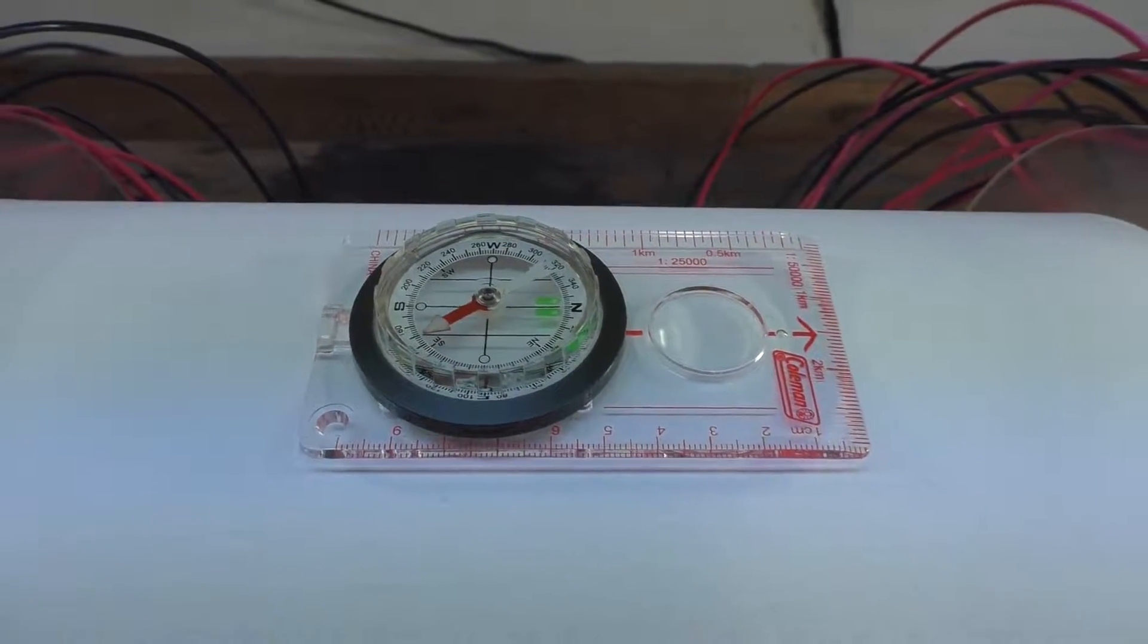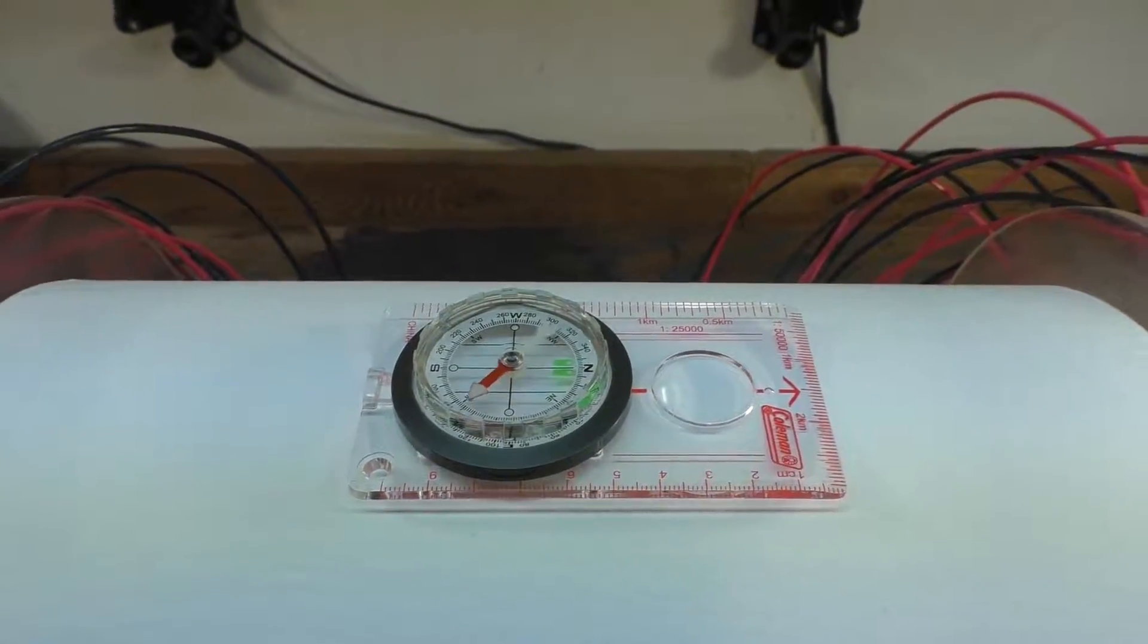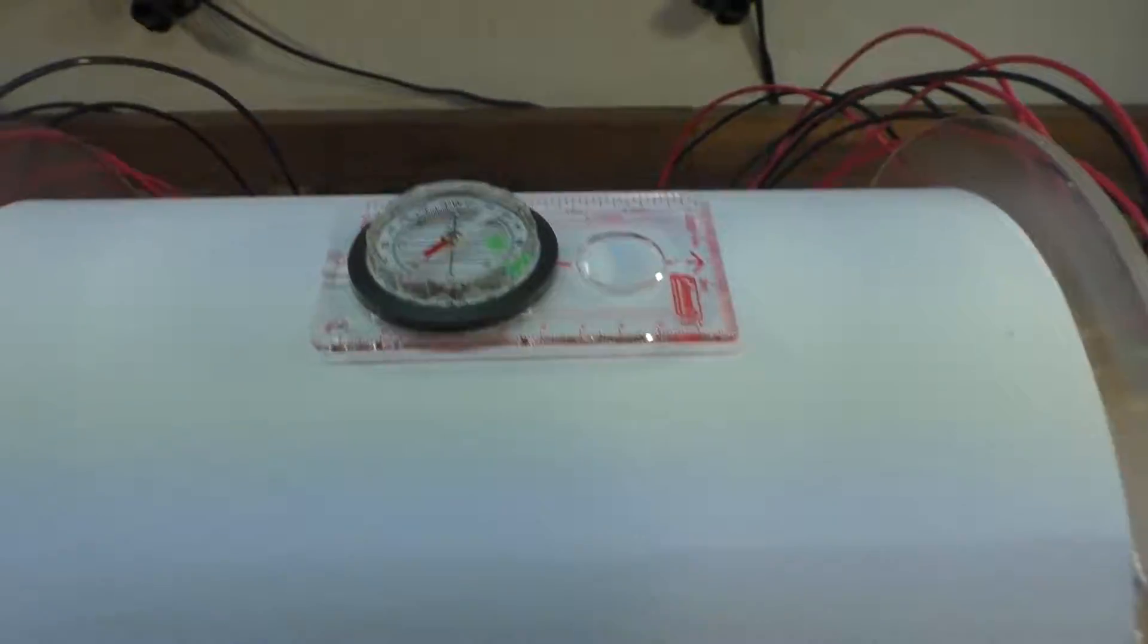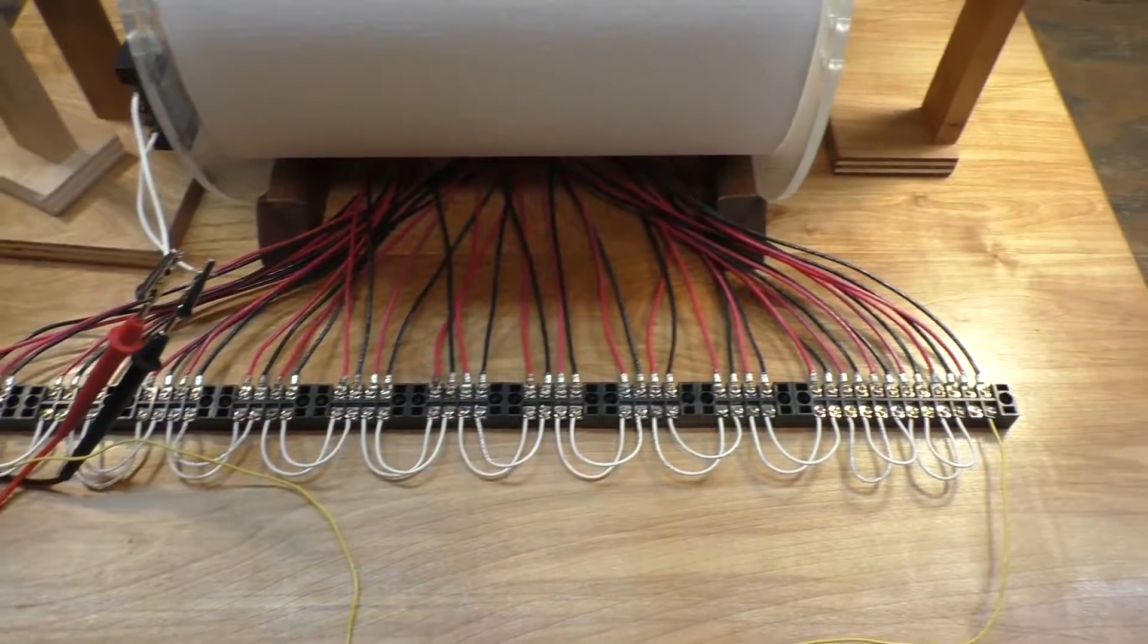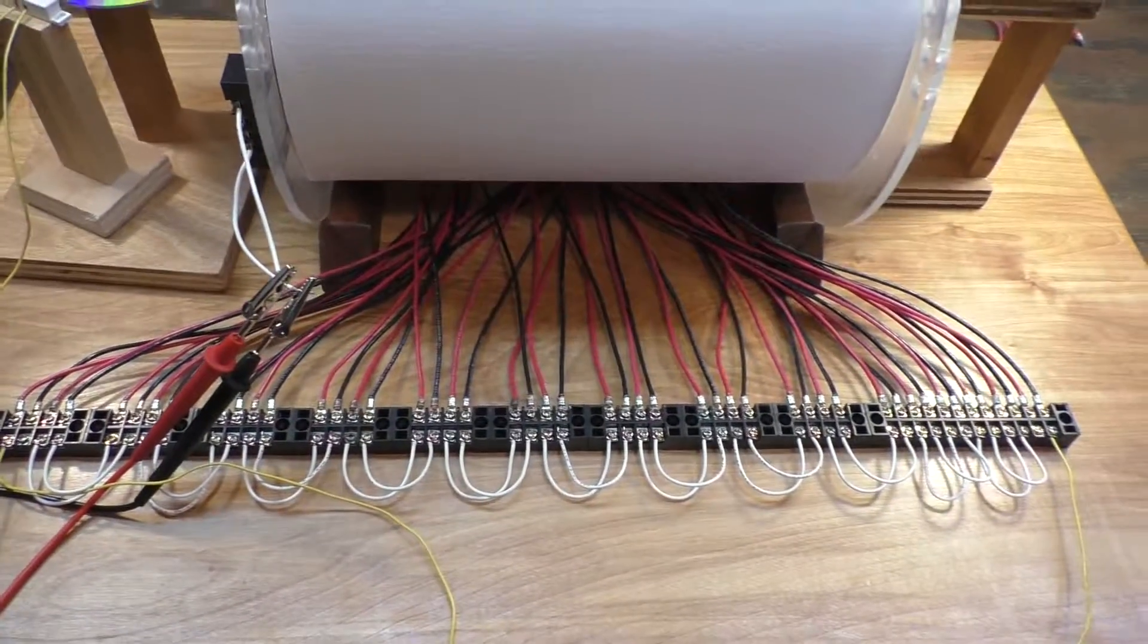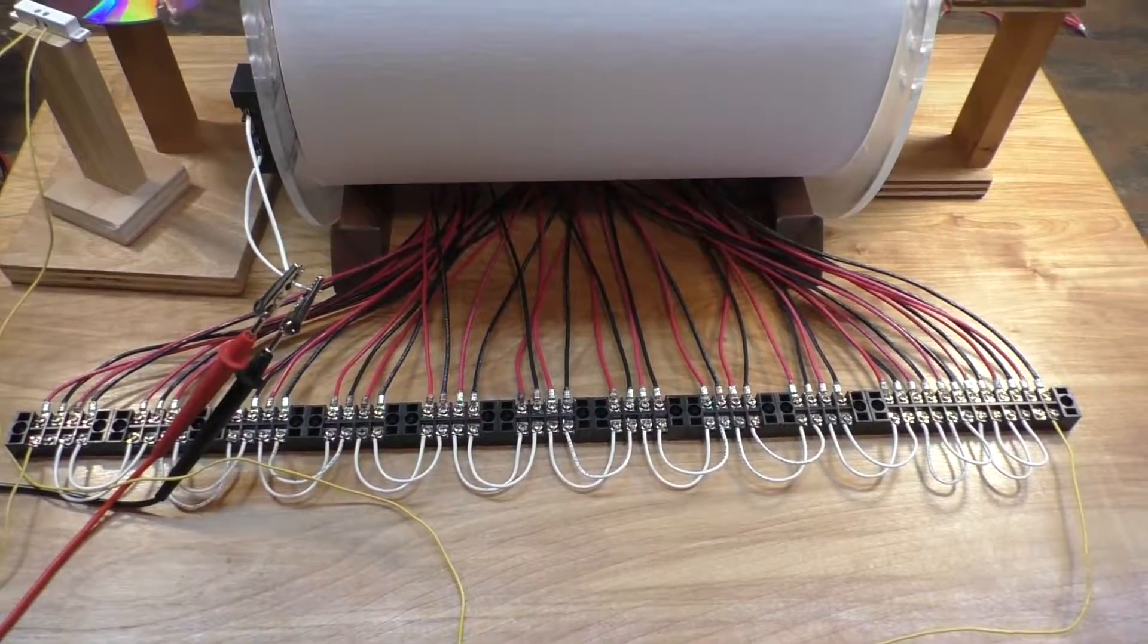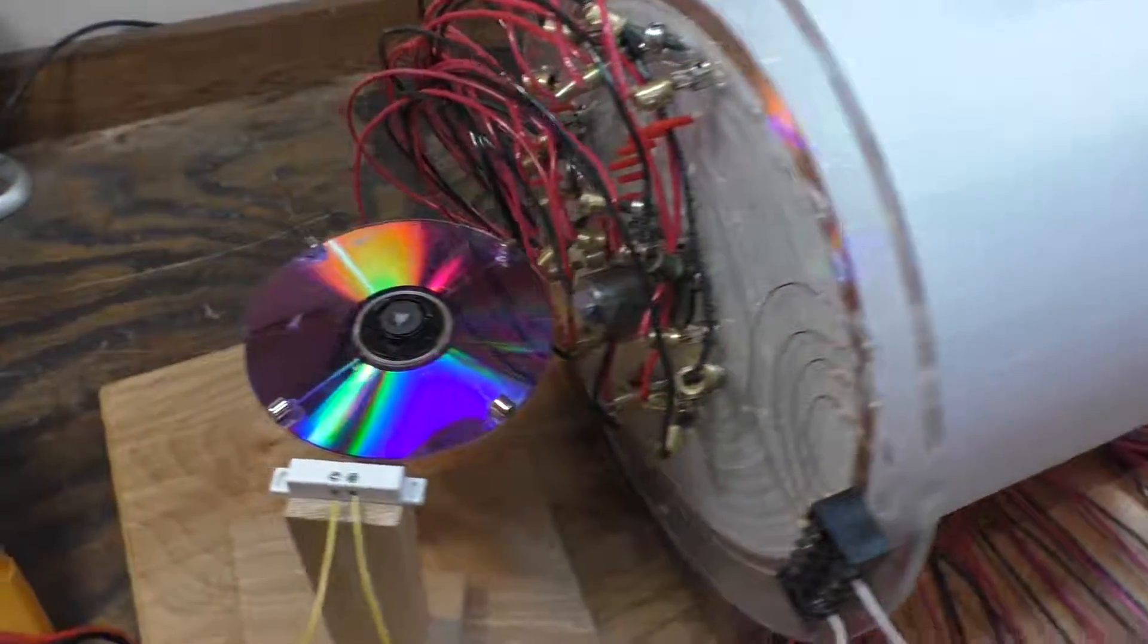So I plan on hooking this thing up to a scope and seeing what type of patterns I'm getting out of the primaries and the secondaries on this thing. And in the near future, I'll post how I've actually wired all these 12 individual coils together to give you an idea exactly how I came up with this result.